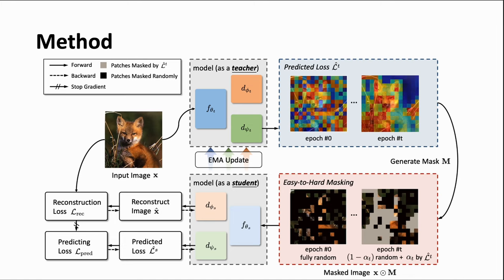Here is the overall pipeline of our proposed HPM. It contains a student network and a teacher network. At each training step, input images are first fed into the teacher to predict the patch-wise reconstruction loss. Then binary masks are generated based on the current epoch and predicted loss,